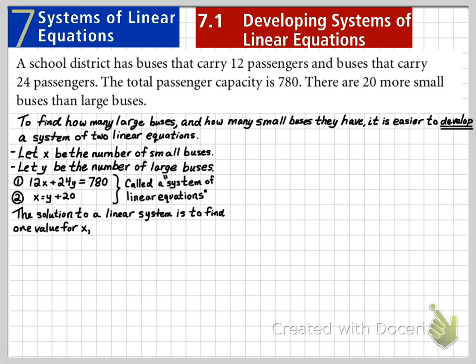The solution to a linear system is to find one value for X and one value of Y that's going to work in both equations.